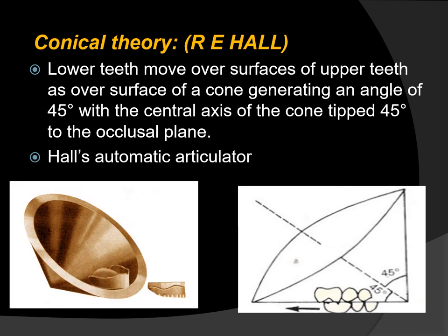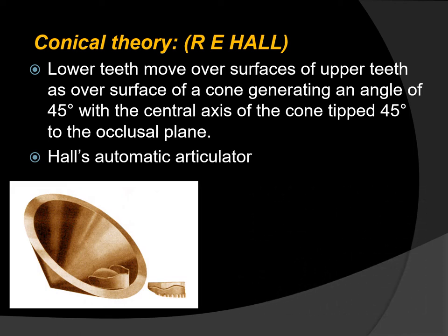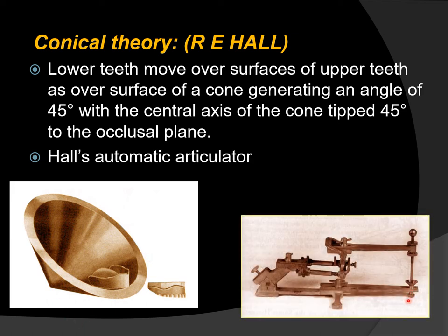The conical theory articulators were proposed by R.E. Hall. According to conical theory, the lower teeth move over the surface of the upper teeth as over the surface of a cone generating an angle of 45 degrees with its central axis tipped 45 degrees to the occlusal plane. This is the cone, and the central axis of the cone is tipped at 45 degrees to the occlusal plane. An example is Hall's automatic articulator.